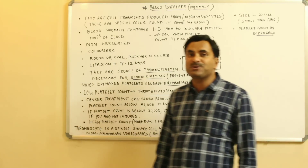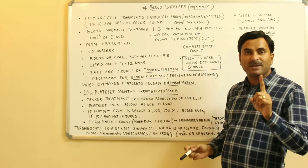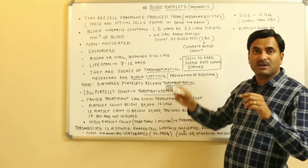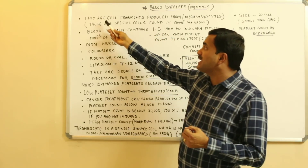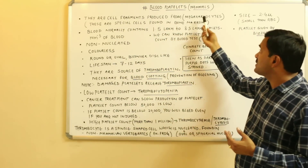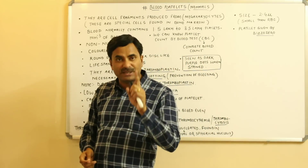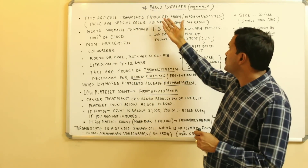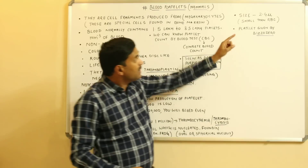Welcome students. Today we are going to study about blood platelets. The very important thing first of all: I have not written 'cell' for blood platelets. The reason is because they are not complete cells — they are cell fragments which are produced from special cells found in the bone marrow called megakaryocytes. That's why we use the term 'platelets' rather than cells.